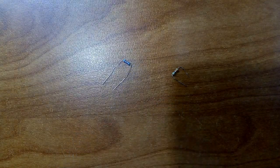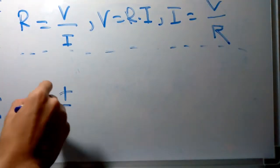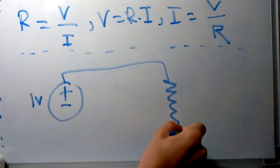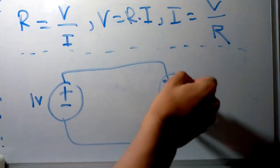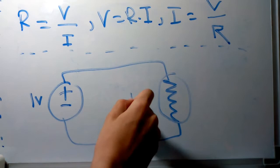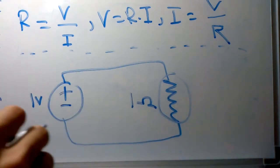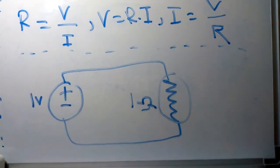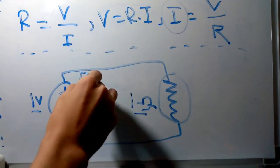This is a very simple circuit with one volt voltage source and one ohm resistor. We can easily calculate the current by dividing the voltage by the resistance, which equals one volt divided by one ohm, resulting in one amp of current being drawn.